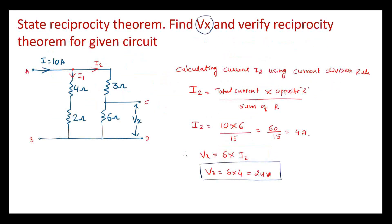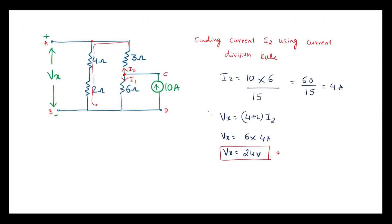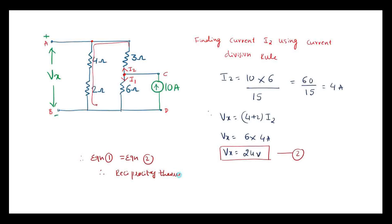Vx = 24 volts — call this equation 2. From the first circuit we got equation 1: Vx = 24 volts. Therefore equation 1 equals equation 2, and our reciprocity theorem is verified.